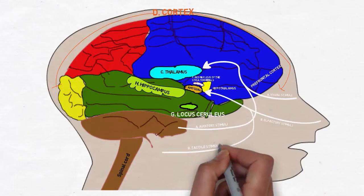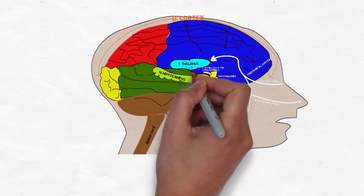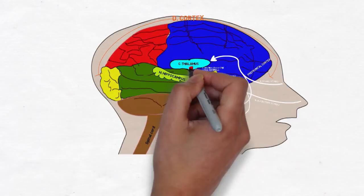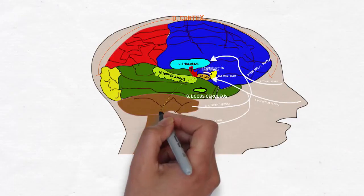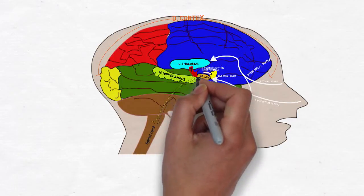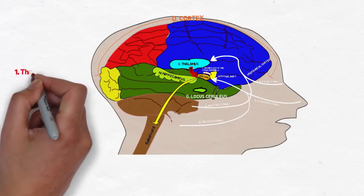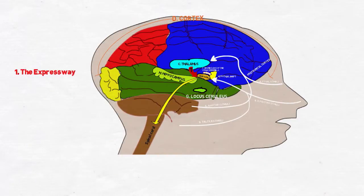Any cues from your incoming senses that are associated with a threat in the amygdala, whether that threat is real or not, current or not, are immediately processed to trigger the fear response. This is the expressway. It happens before you consciously feel the fear.